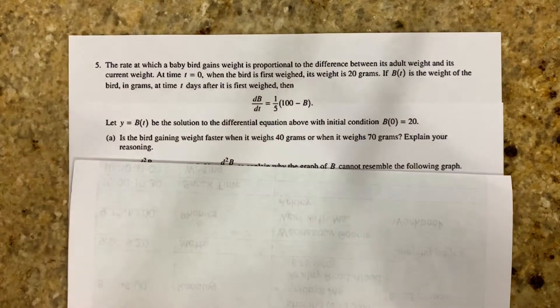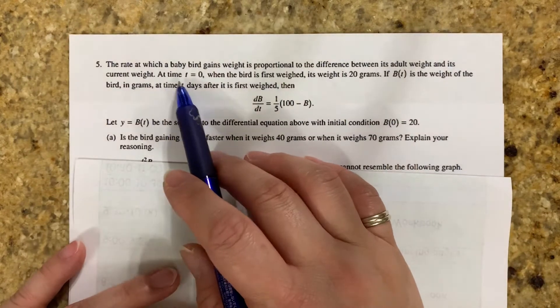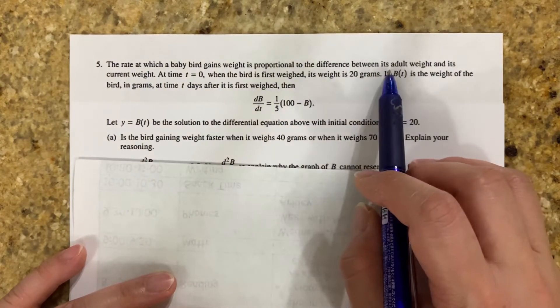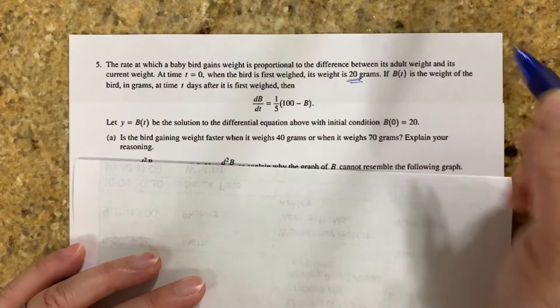This is 2012 FRQ number 5 in the non-calculator section. The rate at which a baby bird gains weight is proportional to the difference between its adult weight and its current weight. At t equals 0, where the baby bird is first weighed, its weight is 20 grams.